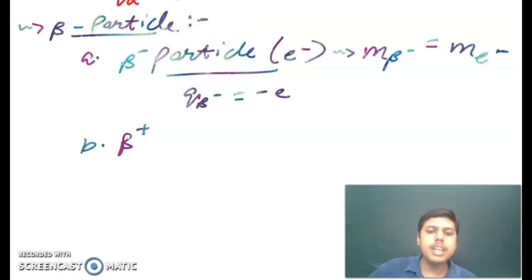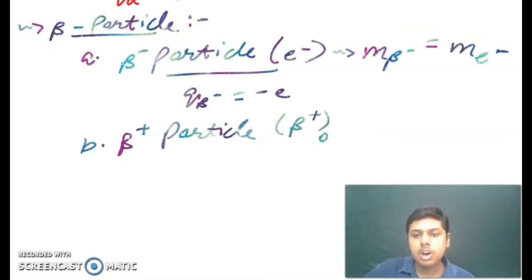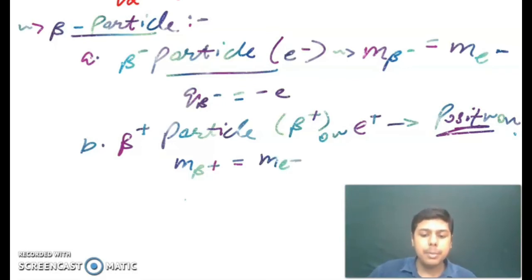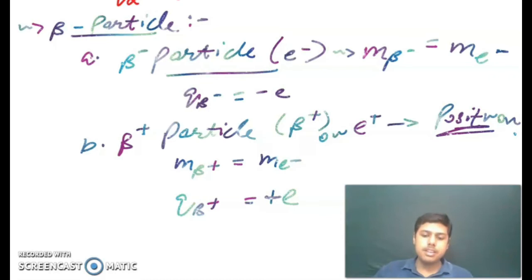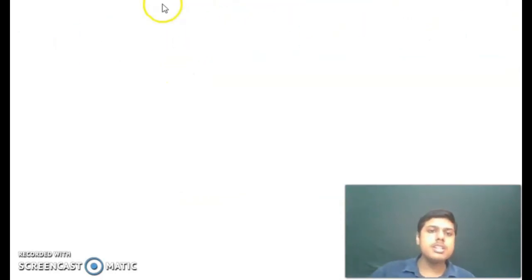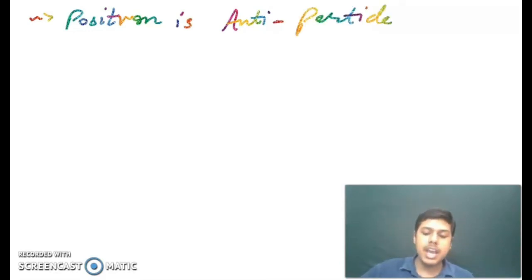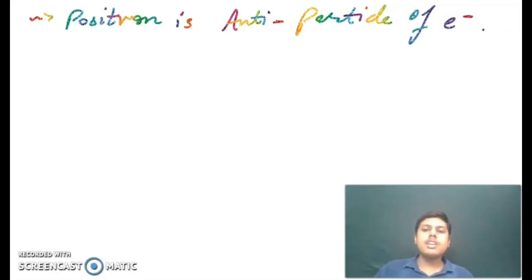Now let us deal with the beta positive particle. This beta positive particle is represented by beta-positive or a-positive, and is also called the positron. The mass of the beta positive particle is equal to the mass of an electron, and the charge of the beta positive particle is equal to plus e. An important statement: the positron is considered to be an antiparticle of the electron.